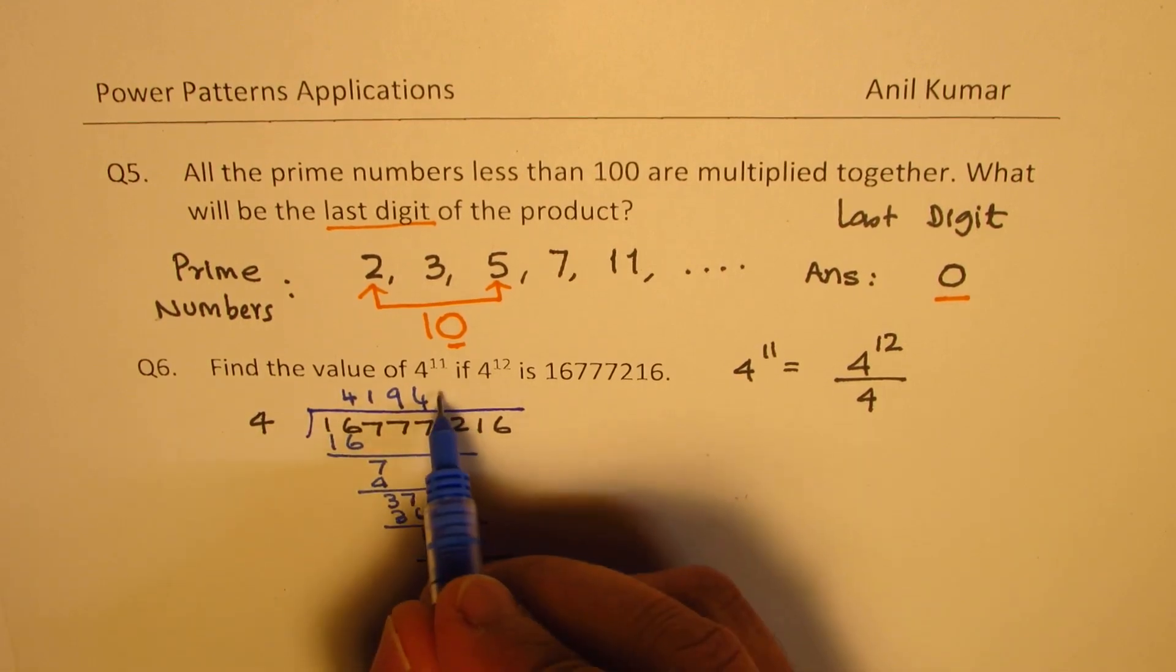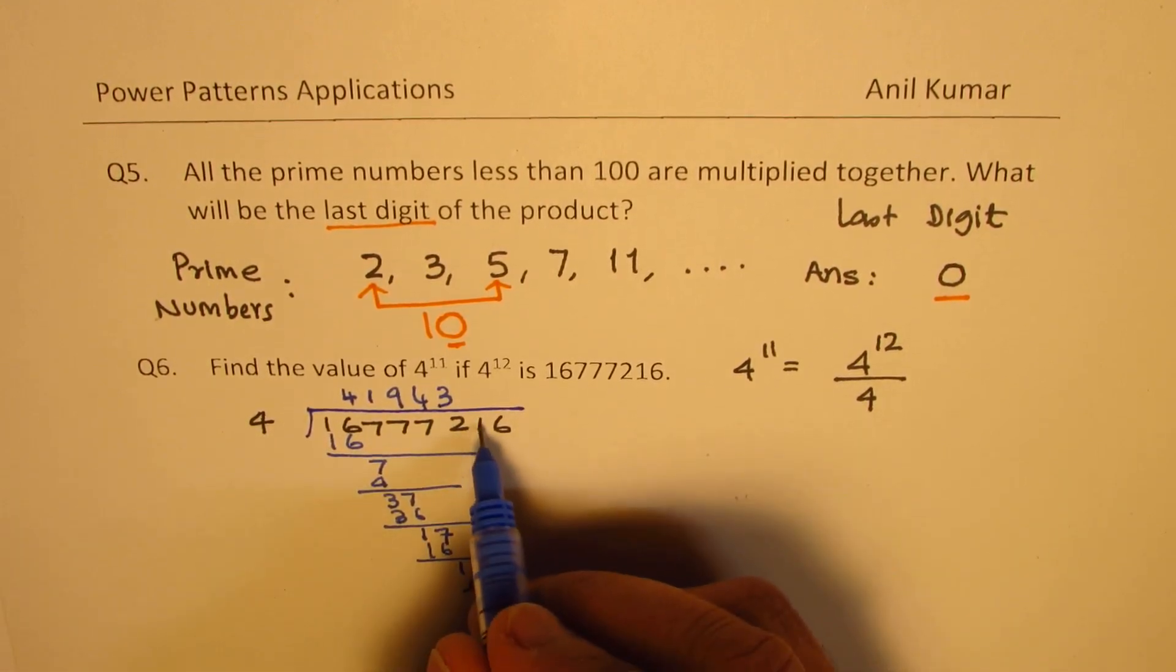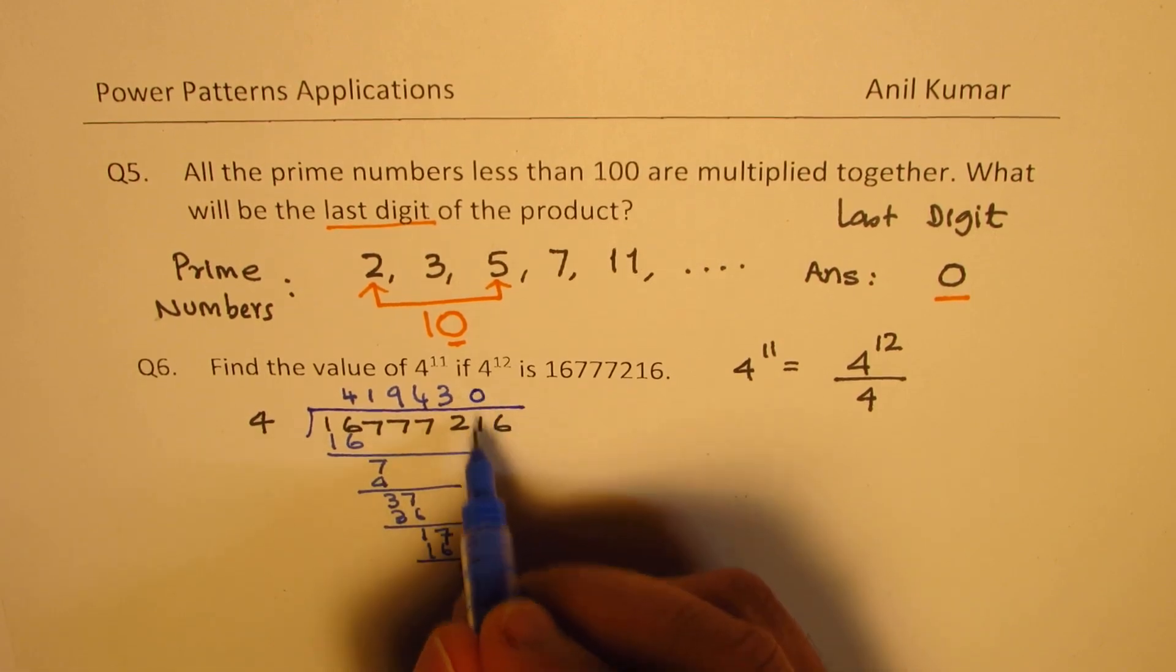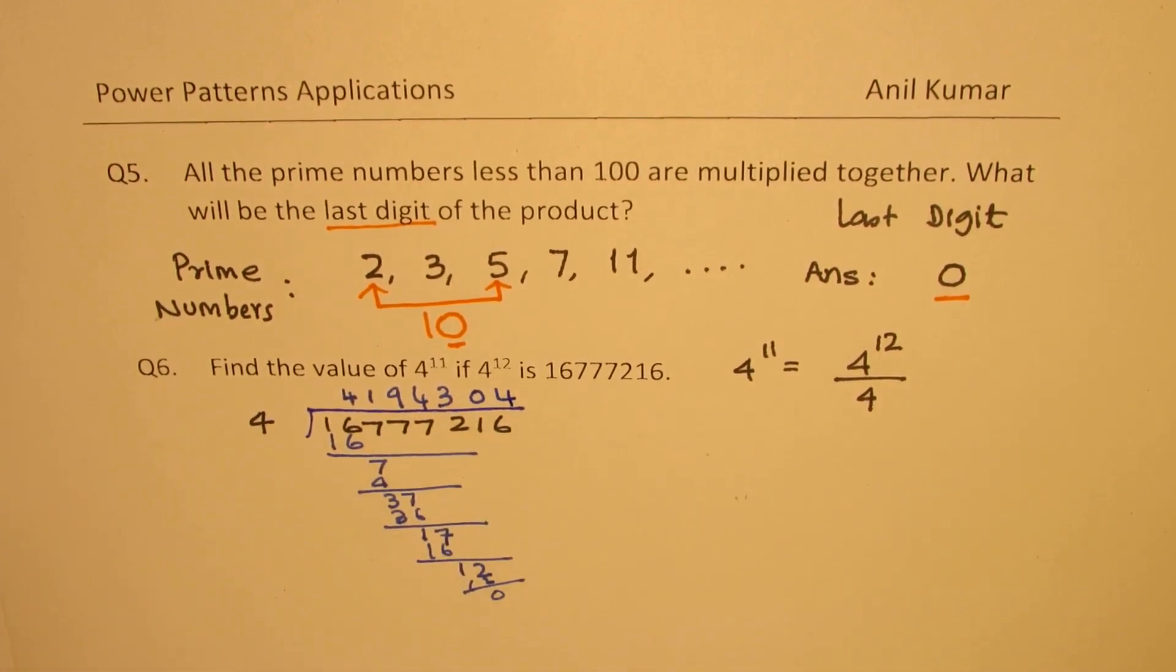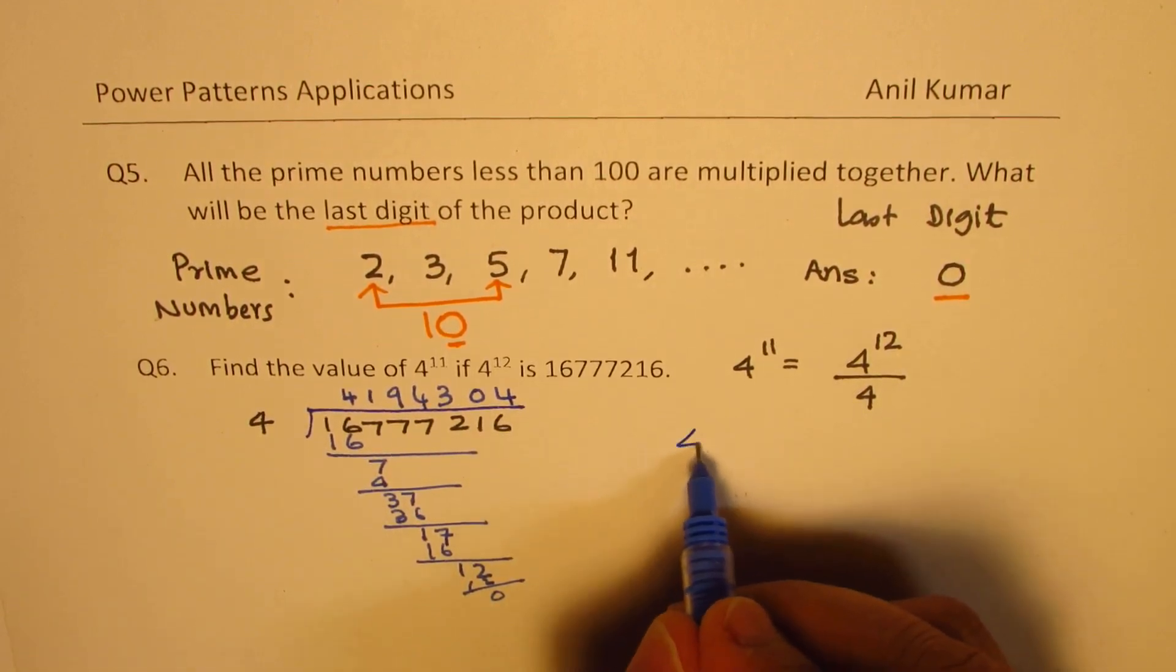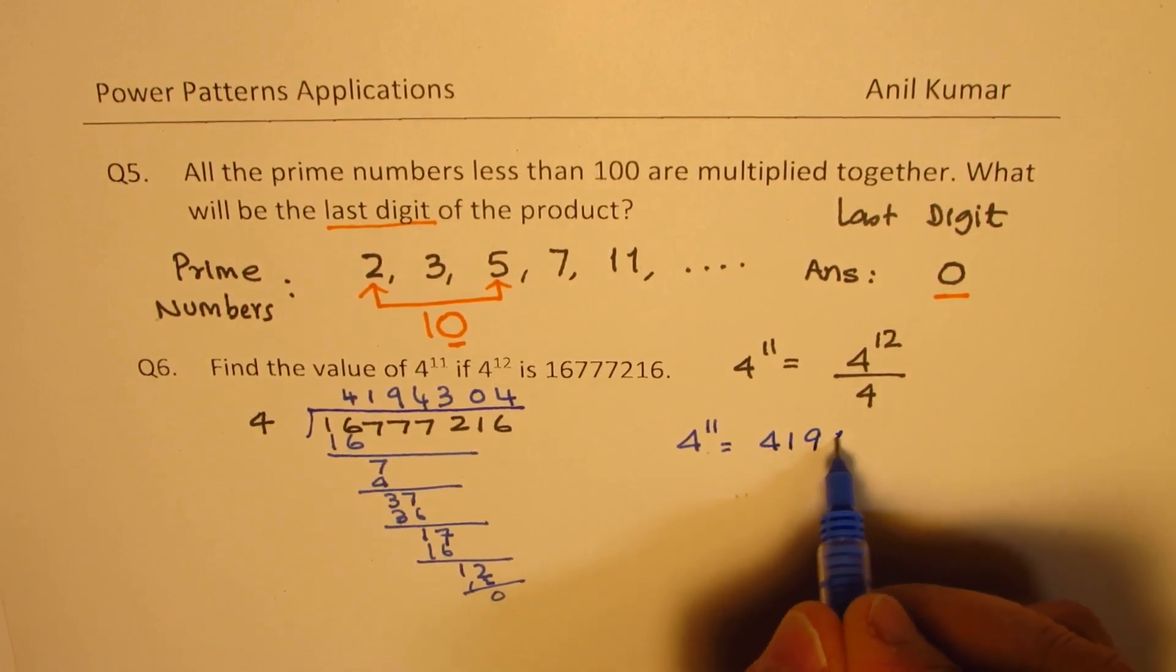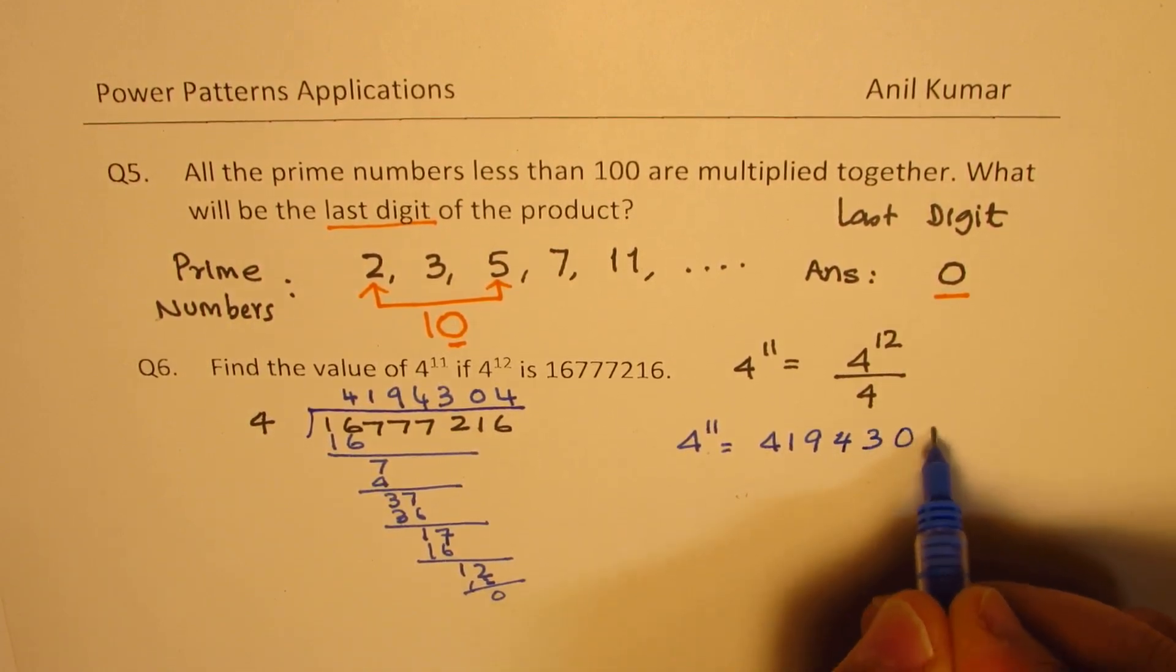Now it's the turn for 2. 4 times 3 is 12. So remainder is 0. Bring down 1 over just 0 and then 16 will go 4 times. So when we perform this division, we get 4 to the power of 11 as equal to 4194304.